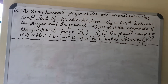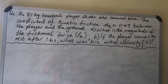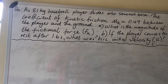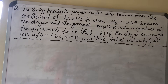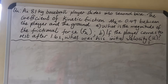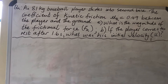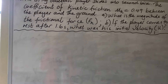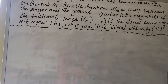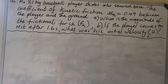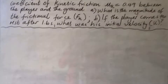Welcome back. We have a question: an 81 kg baseball player slides into second base. The coefficient of kinetic friction, mu k, is given as 0.49, acting between the player and the ground. Part A asks for the magnitude of the frictional force. Part B asks: if the player comes to rest after 1.6 seconds, what is his initial velocity? We need to calculate the frictional force and the initial velocity, so let's make a free body diagram.